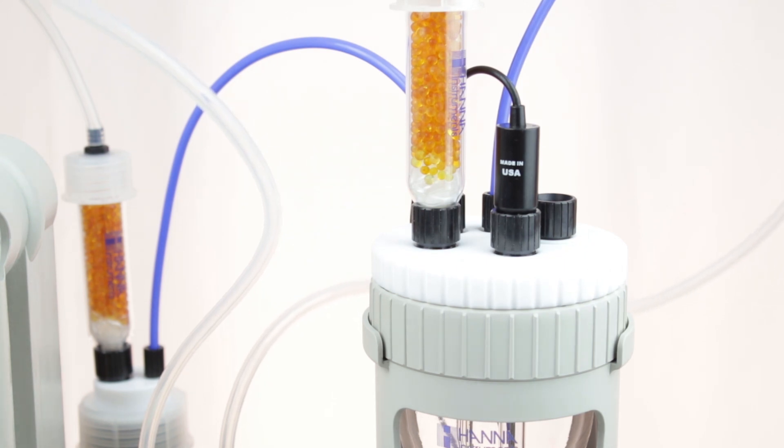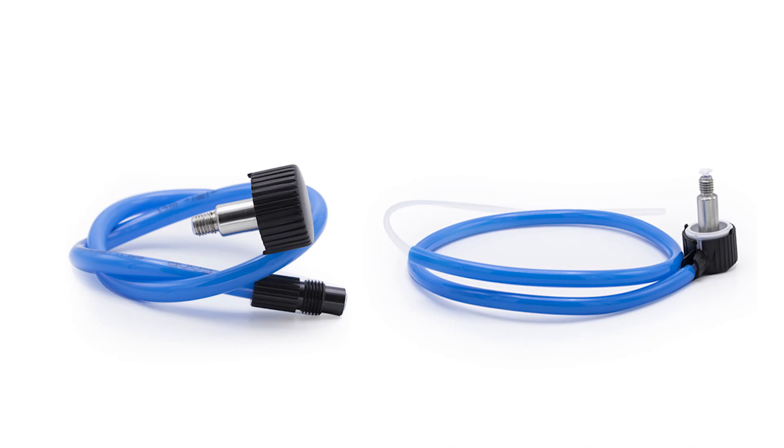Now we can install our new tubes. Note the difference between them. The dispensing tube has a flanged end with a black fitting and the aspiration tube does not. To install, take your new tubing and remove the black cap lock.